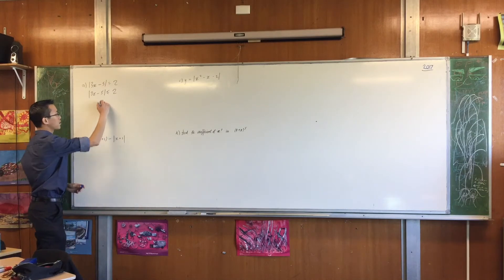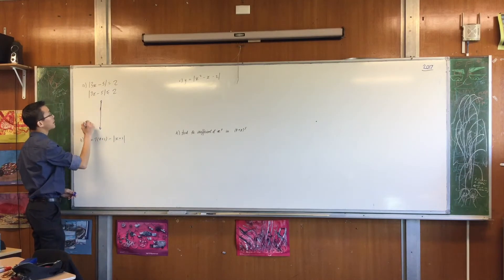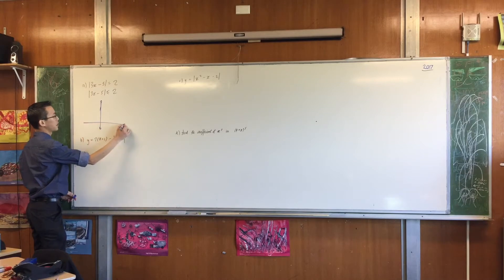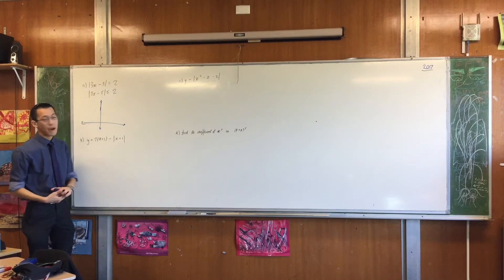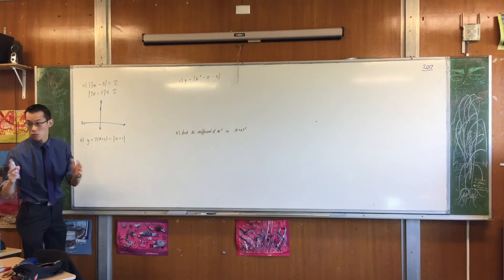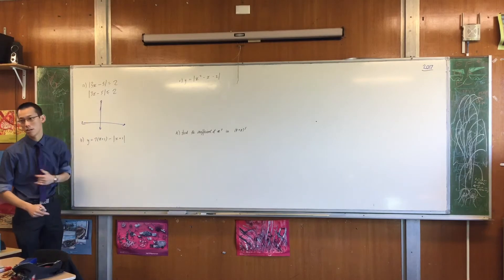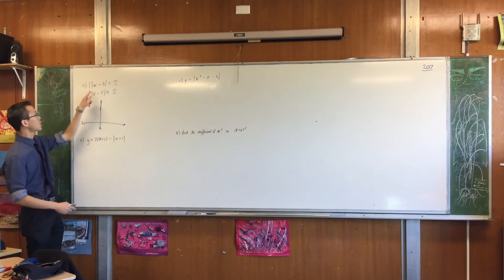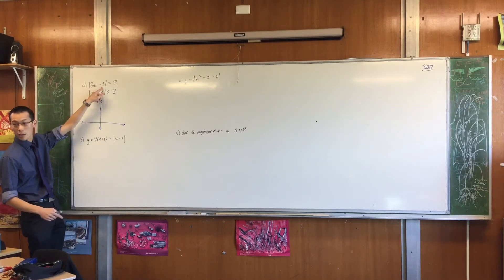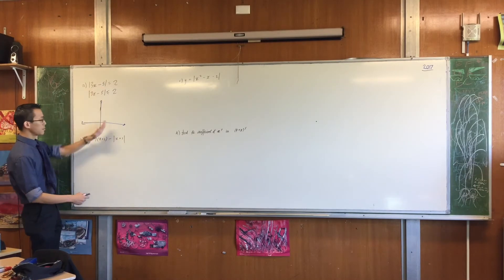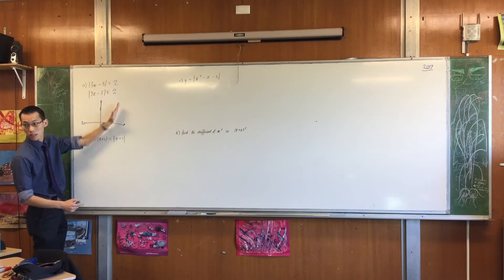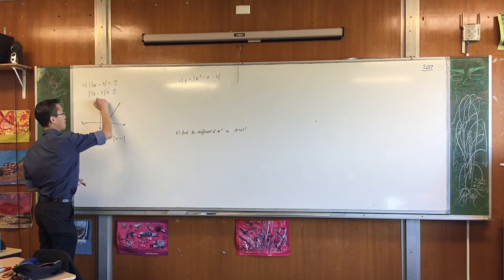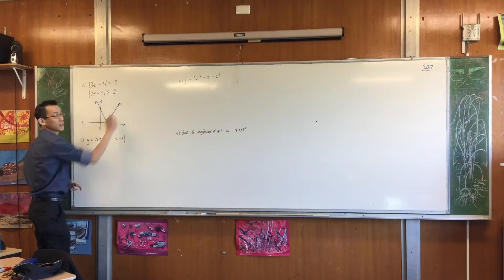I'm always going to appeal as much as I possibly can to a graph. So 3x minus 5 — what does it roughly look like? Forget about the absolute value sign for a second. You can see the y-intercept. It will be something like this line. But of course, the absolute value means it's going to rebound, like so.